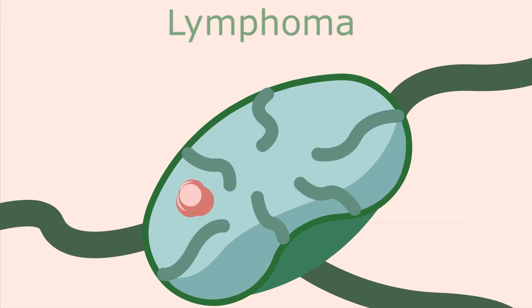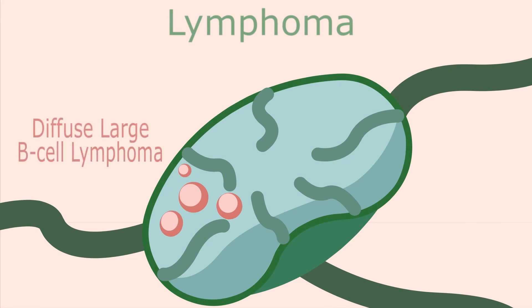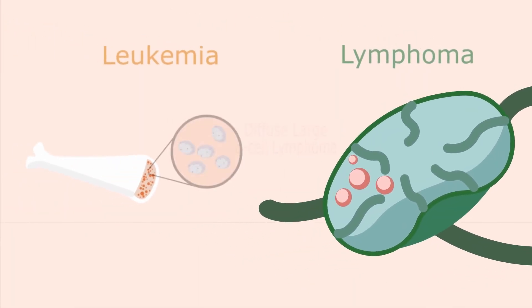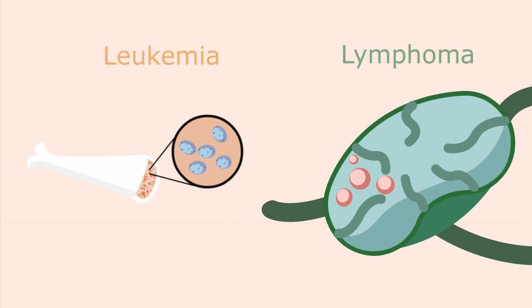These white blood cells have come to the lymph system for maturation, and in this example we see a diffuse B-cell lymphoma. So a quick recap: leukemia is cancer that originates from the blood-forming tissues, while lymphoma is cancer that begins from the white blood cells that reside in the lymphatic system.